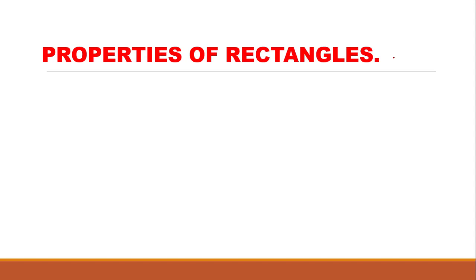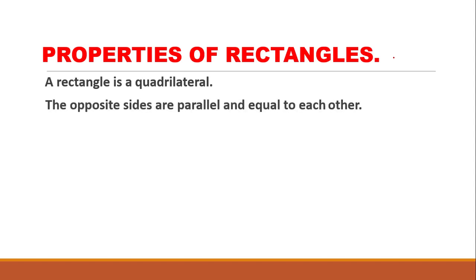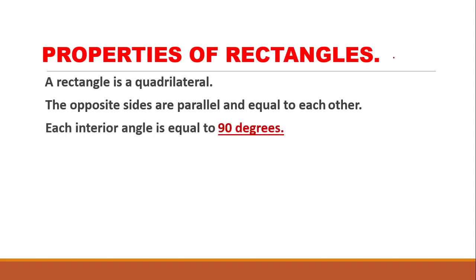Let's talk about more properties of rectangles. A rectangle is a quadrilateral — a four-sided shape. The opposite sides are parallel and equal to each other. Parallel lines are those lines which have the same distance between them — some people define them as lines which cannot meet. Each interior angle of a rectangle is equal to 90 degrees.